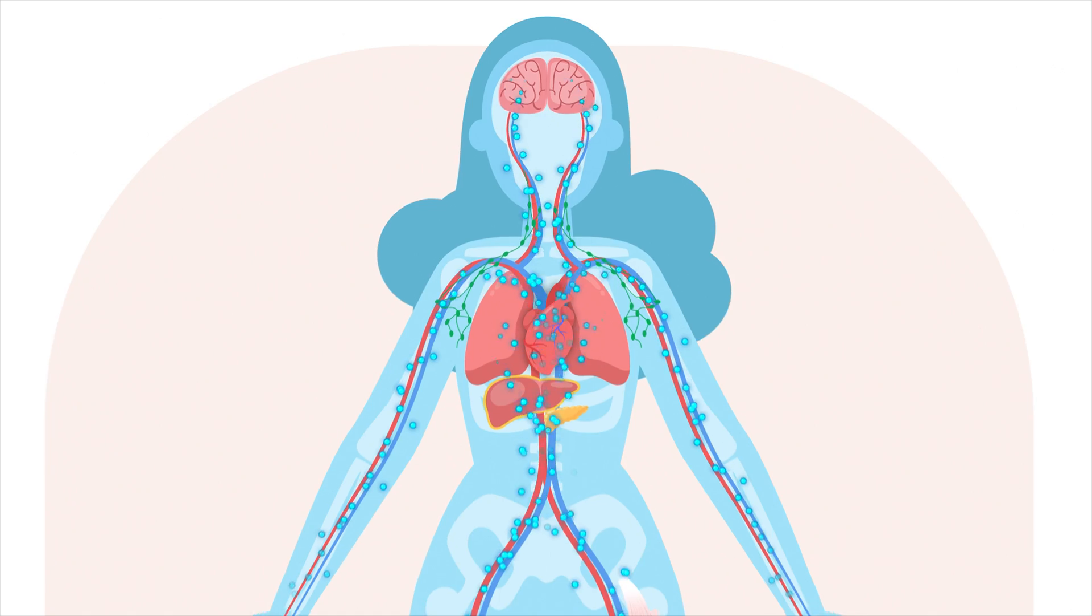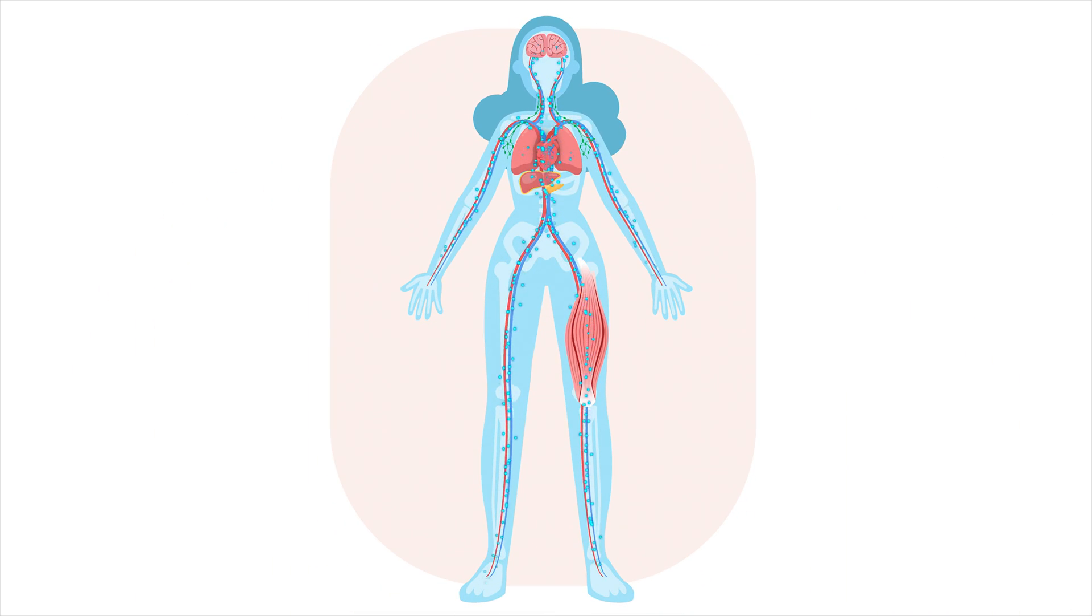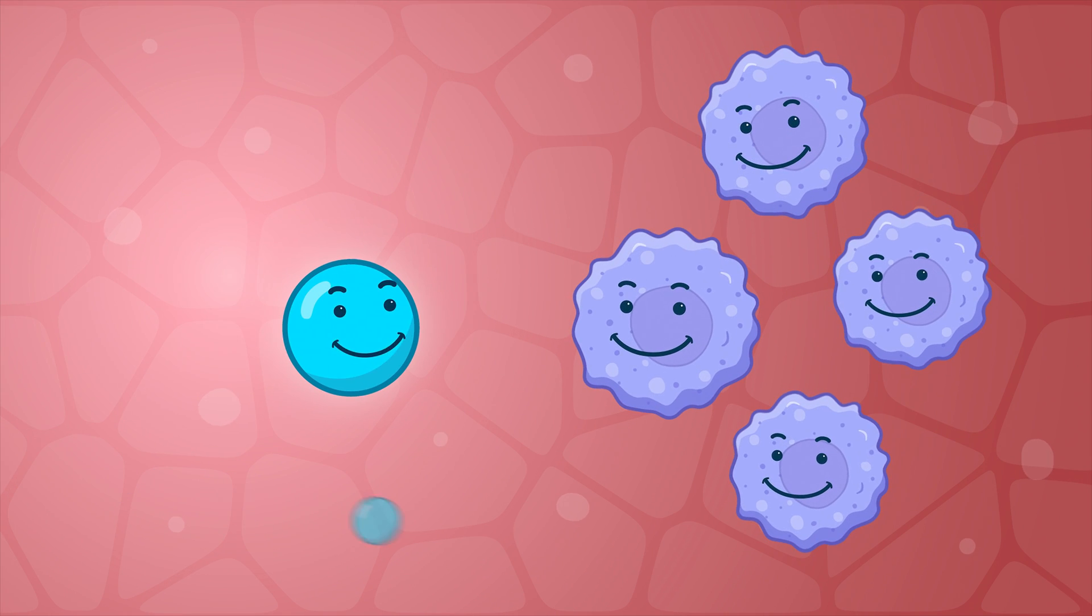These include your brain, heart, liver, fat cells and immune system. Myokines help regulate and fine-tune the function of these organs and tissues.